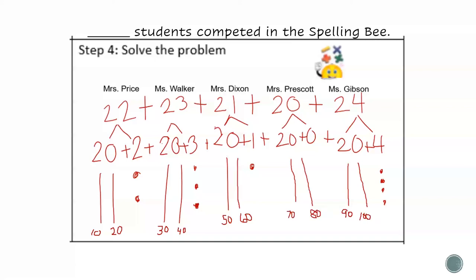There are 10 groups of 10, which is 100. Now we just have to count the ones.